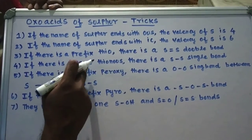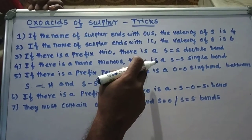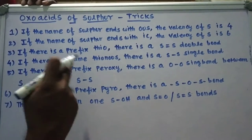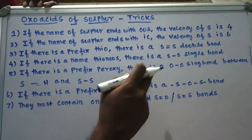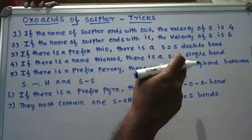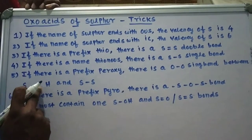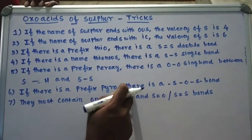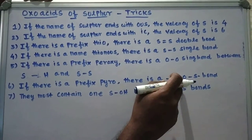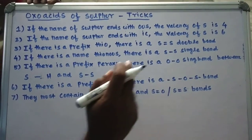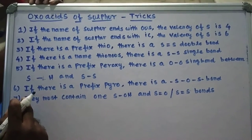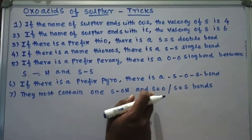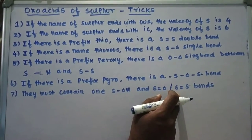Fourth rule: if there is the name thionyl, there is a sulfur-sulfur single bond. Fifth rule: if there is a prefix peroxy, there is an oxygen-oxygen single bond between sulfur and hydrogen, and sulfur and sulfur. If there is a prefix pyro, there is a sulfur–single bond–O–single bond–S arrangement. Last and very important rule: the structure must contain one S–OH and S=O or S=S bonds.